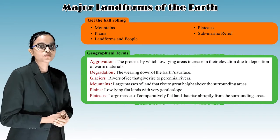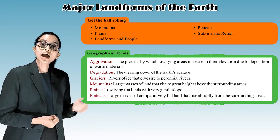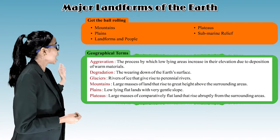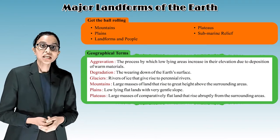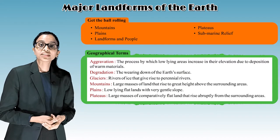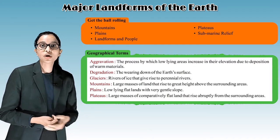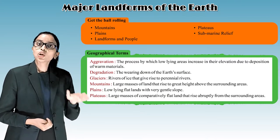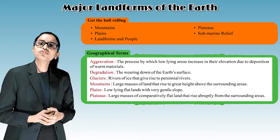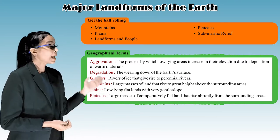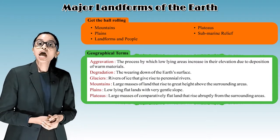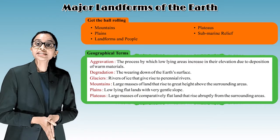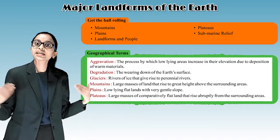Glaciers: rivers of ice that give rise to perennial rivers. Mountains: large masses of land that rise to great height above the surrounding areas. Plains: low-lying flat lands with very gentle slope. Plateaus: large masses of comparatively flat land that rise abruptly from the surrounding areas.